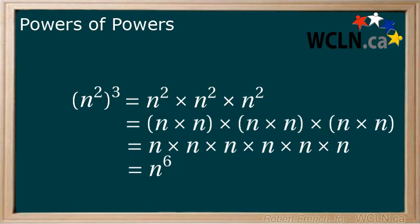Now let's bring our original n squared to the power of 3 down. Can you see the connection? 2 multiplied by 3 equals 6. So when raising a power by a power, you multiply them together.